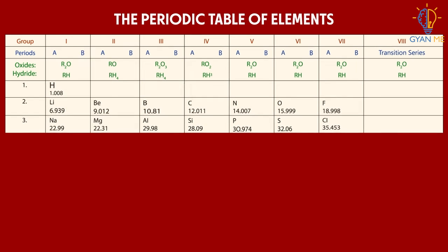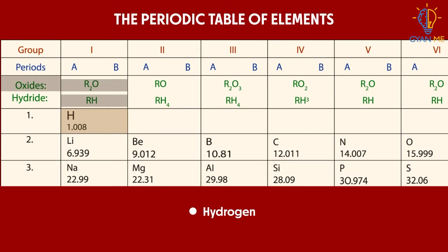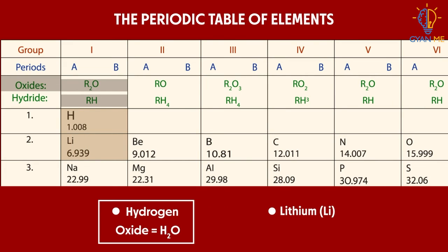For example, look at this oxide of hydrogen. Its formula is H2O. Below it is element lithium, whose oxide is also like that of the hydrogen, i.e. Li2O.